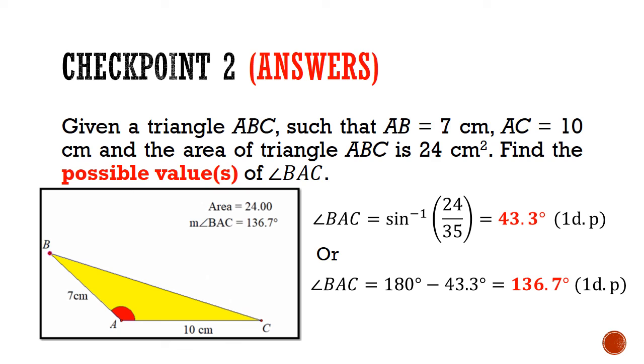To get the obtuse angle answer, you'll take 180 degrees minus our initial answer of 43.3 degrees to give us 136.7 degrees. So there are two answers in total.